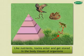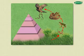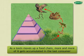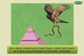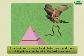The problem is that as a toxin moves up a food chain, more and more of it gets accumulated in the last consumer. This can be very well understood with the help of the following example.